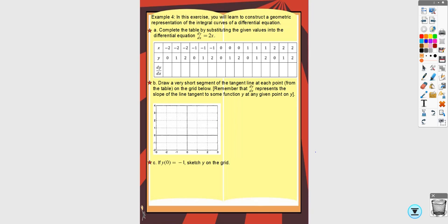This is the second half of 6.1, covering slope fields and Euler's method. For slope fields, you plug in points into a differential equation. This chart has a lot of points — you wouldn't be asked to do this many on the AP test. It's usually going to be nine or twelve points, like a three-by-three or four-by-three grid.